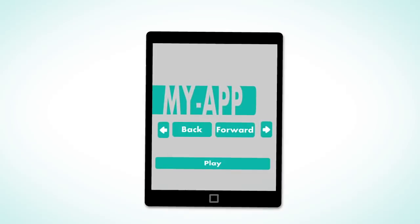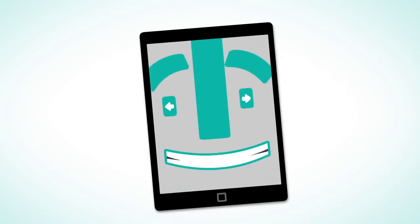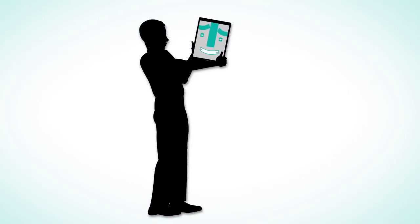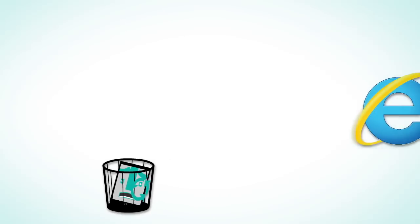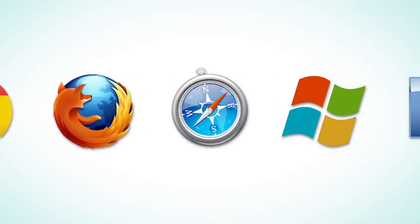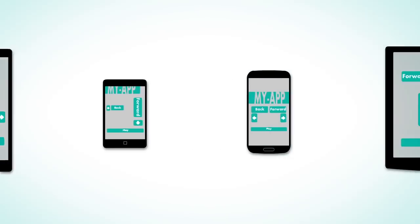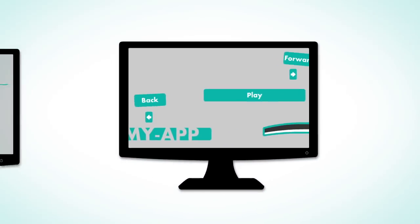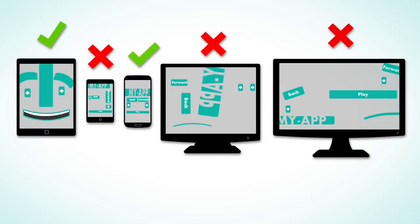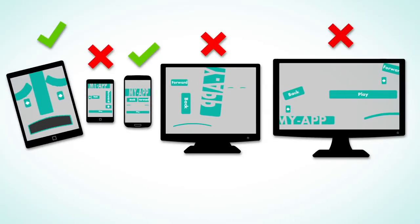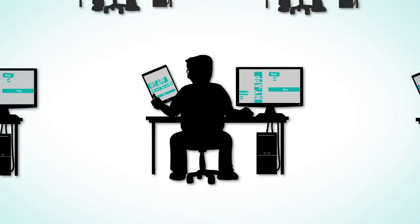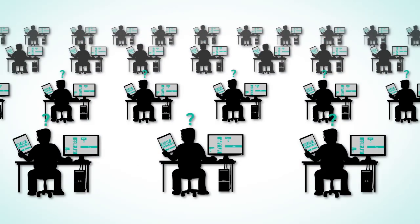In today's world, UI is the face of your application. It determines if the user will use your application or throw it in the recycle bin. But with today's rapid development cycles, the amount of browsers, operating systems, devices, form factors and screen resolutions, it is more difficult than ever to test if your application appears right on each. The only current solution is to use manual testers, and this takes a lot of time and money.